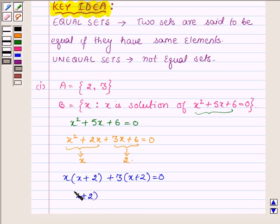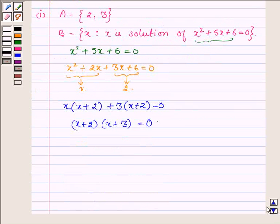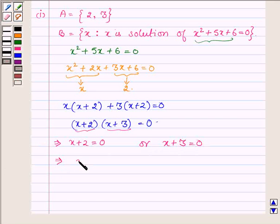Taking (x + 2) common, we have (x + 2)(x + 3) = 0. Since the product of two numbers is zero, this implies either x + 2 = 0 or x + 3 = 0. Therefore, either x = -2 or x = -3.